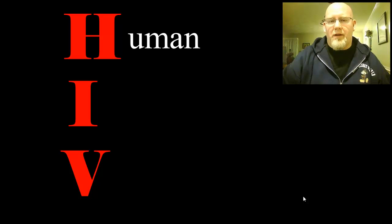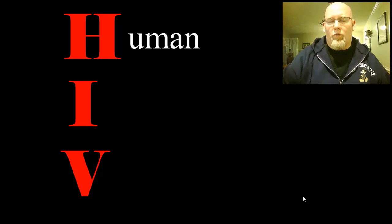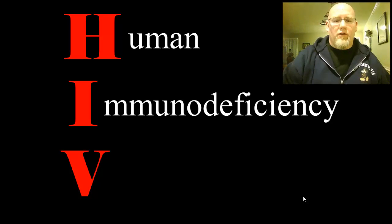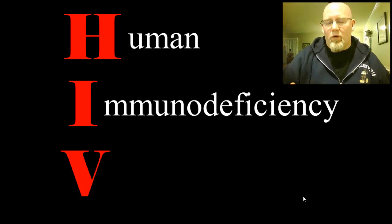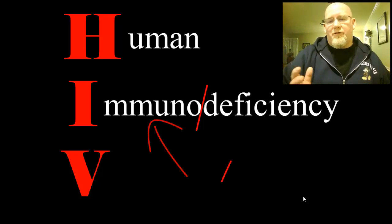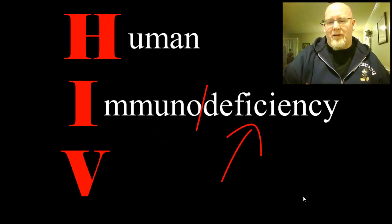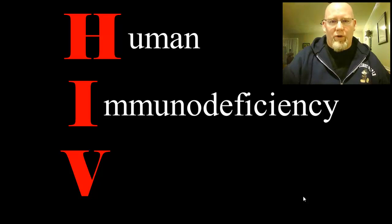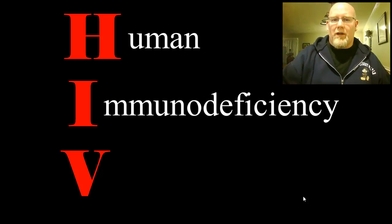I'm sure most of us have seen this acronym before: HIV. The H stands for human, which means that only human beings can transmit and possess this particular virus. There are theories about it being in monkeys and cats, but in actuality this particular strain of virus is only found in human beings. The I stands for immunodeficiency. It's really two words squished together — immuno refers to the immune system, and deficiency refers to the fact that the immune system is deficient. It's lacking, it doesn't work the way it's supposed to. It makes the immune system deficient.